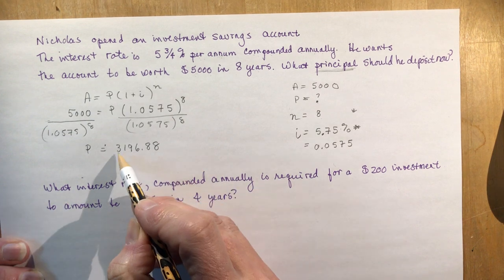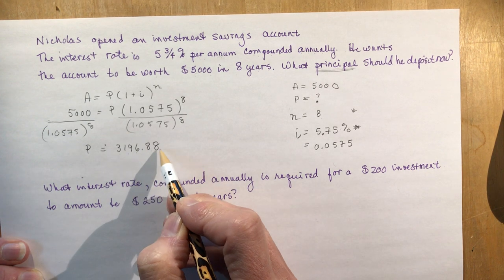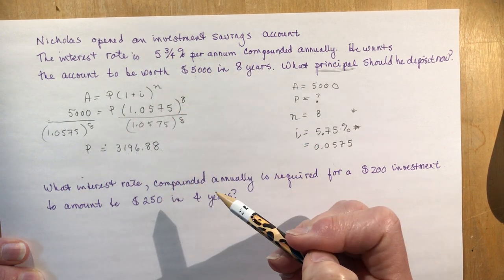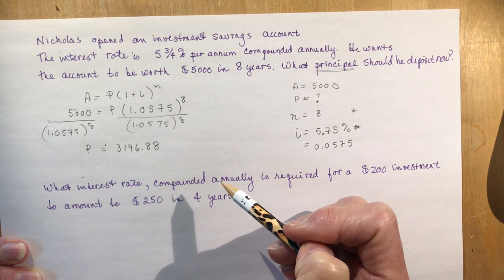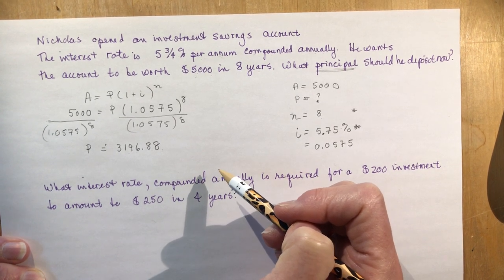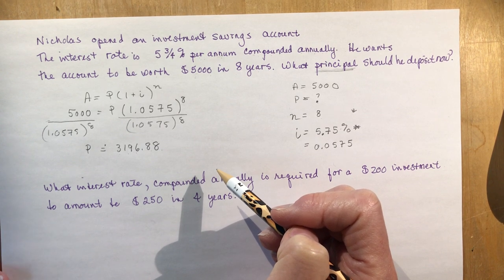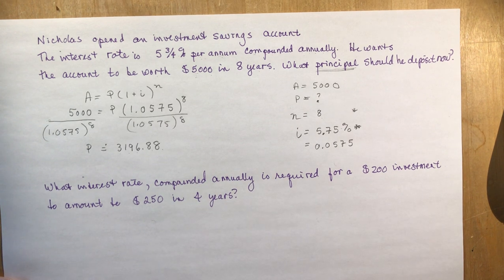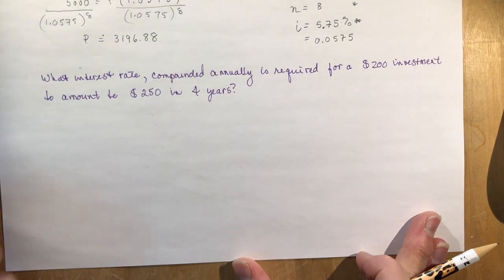He needs to invest $3,196.88 to have $5,000 in eight years at 5.75% per annum compounded annually. As I said before, most banks do some sort of compounding. You're not going to go to the bank and get a simple interest loan — those are unheard of because the bank is trying to make money off of you.